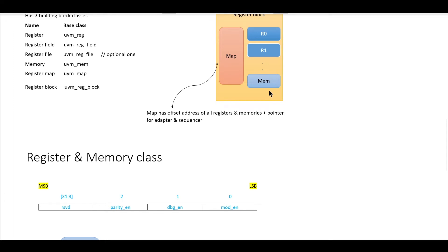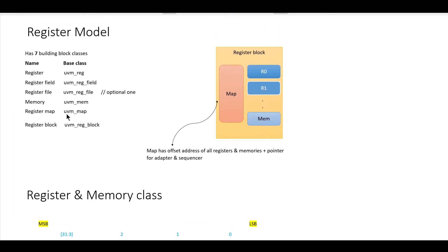If our DUT has one memory, we need to define a memory class extending from UVM mem — this is the base class for defining a memory. The register block has one map, and the base class for that map is UVM map. This map will contain the offset address of all registers and memories along with a pointer for the adapter and sequencer. The register block, which integrates all registers, memories, and maps, has a base class of UVM reg_block.